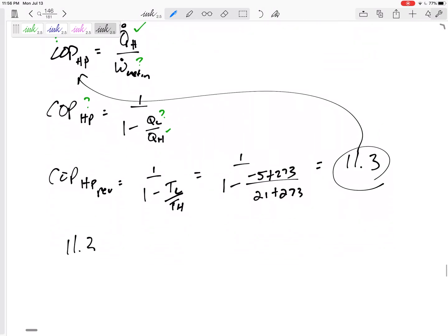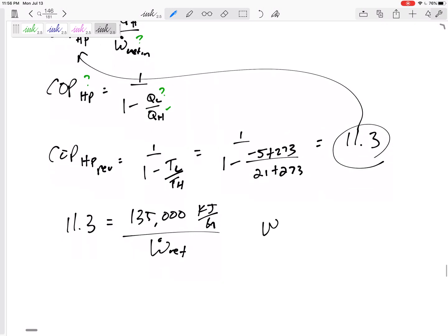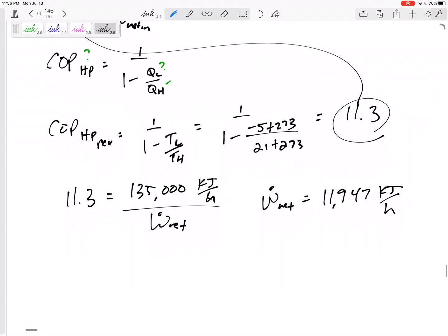The coefficient of performance is 11.3. Now there we go: 11.3 equals QH of 135,000 kilojoules per hour over W net in, that's the power to drive the heat pump.